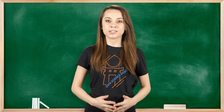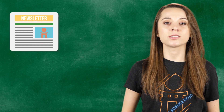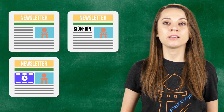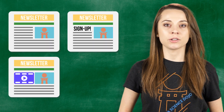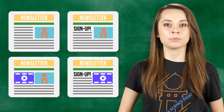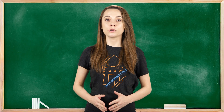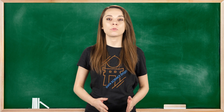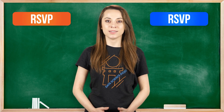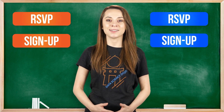Multivariate testing is when you're trying different possibilities. You might have just an image, or try a sign-up form, or add a video with an image, or add a video with the sign-up. Or maybe you're testing four buttons — two that are blue and two that are orange — where one blue and one orange button say RSVP and another blue and orange button say sign up.